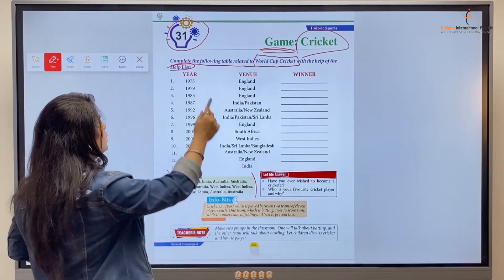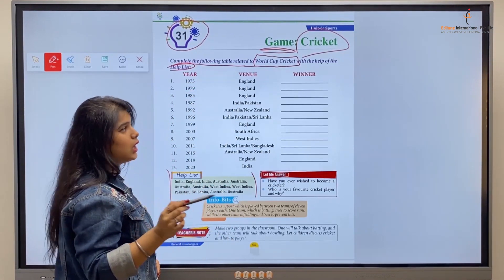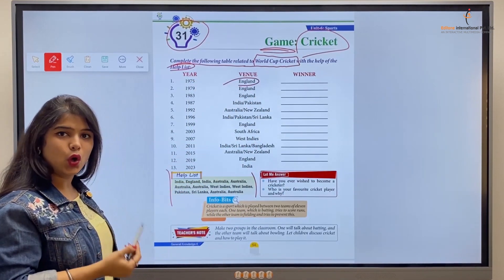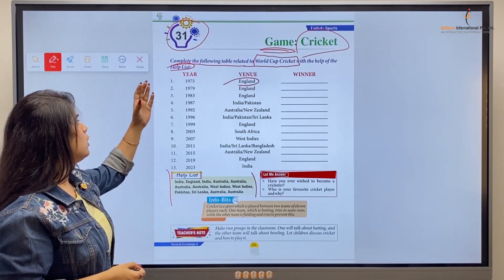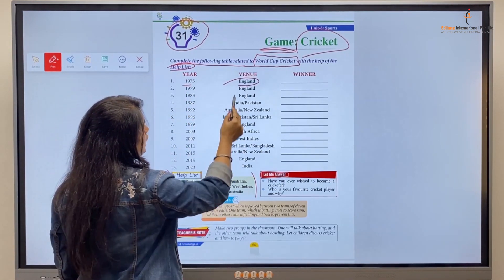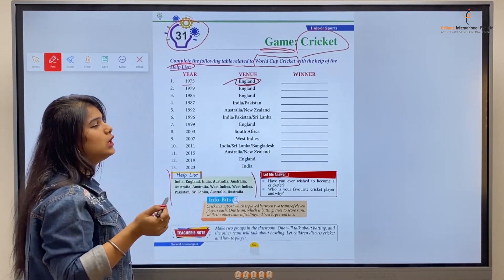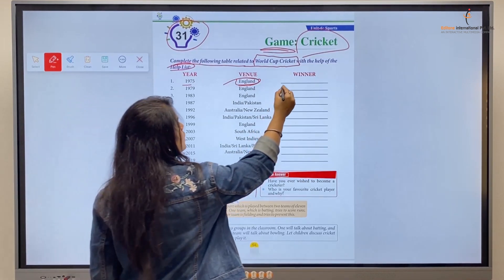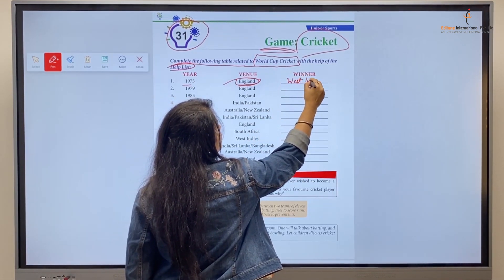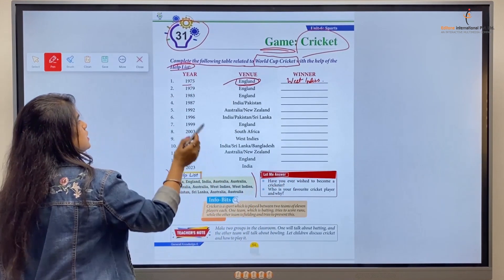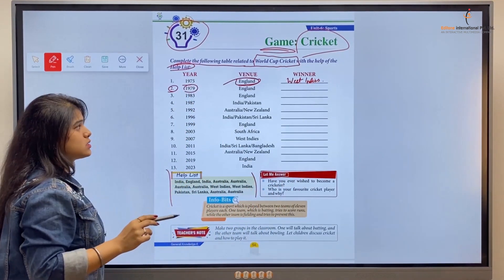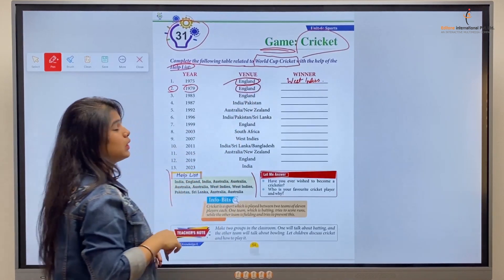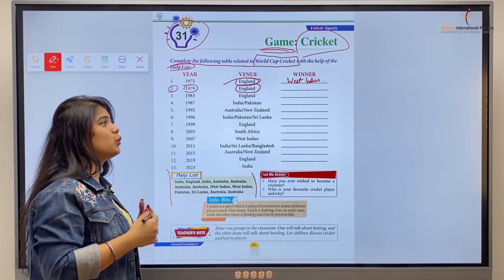Here we have Year, Winner, and Venue - the place where it was held. We have to write which team was the winner of the World Cup in that year. So now let's start. Year number one, 1975, the venue was England. The World Cup was held in England and the winner was West Indies, so we'll write West Indies. Next is number two, 1979. The World Cup took place in England again, and the winner was the team of West Indies, so we'll write West Indies.